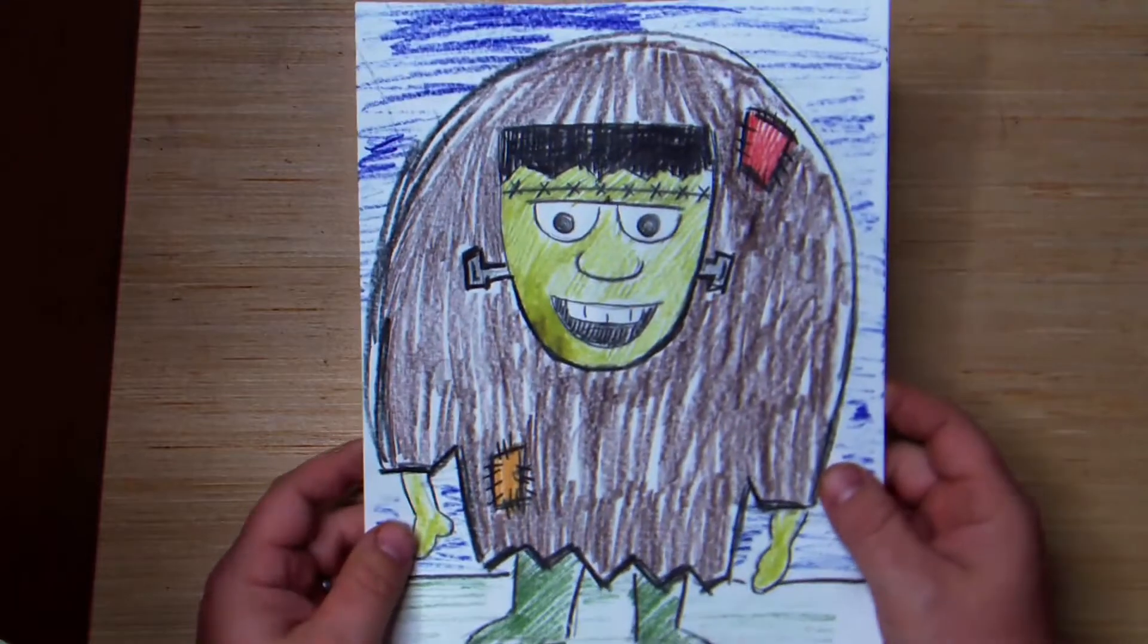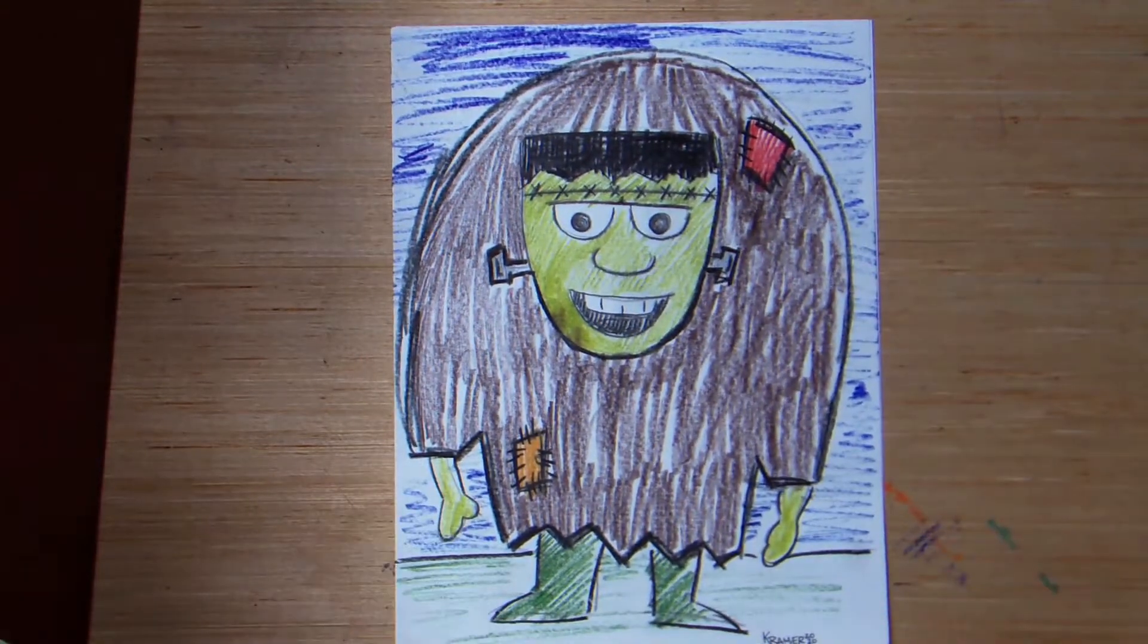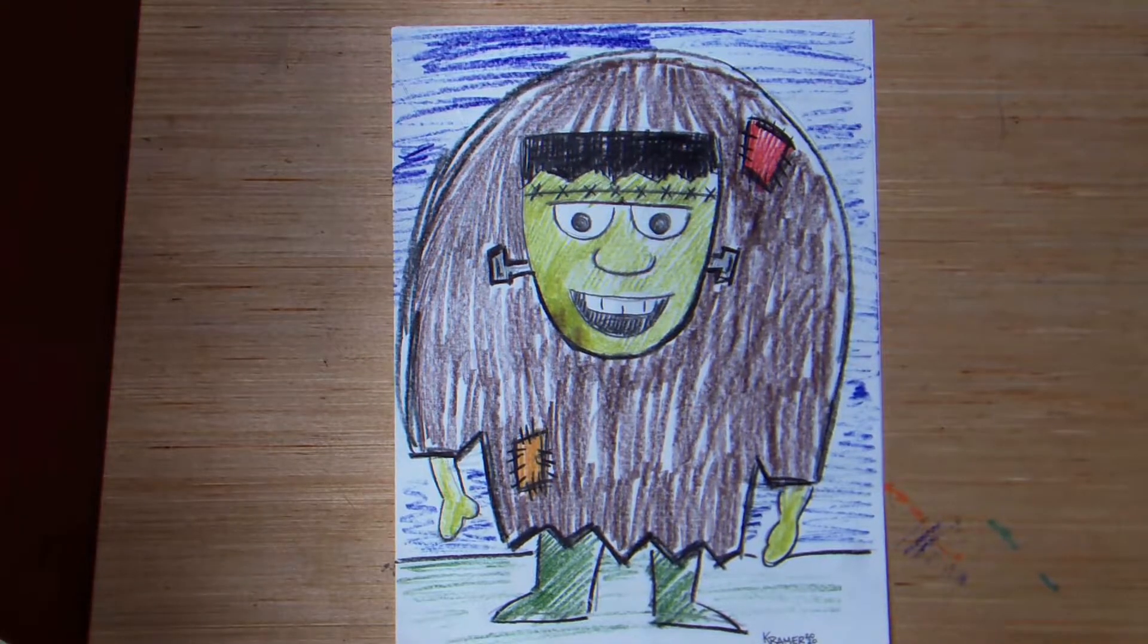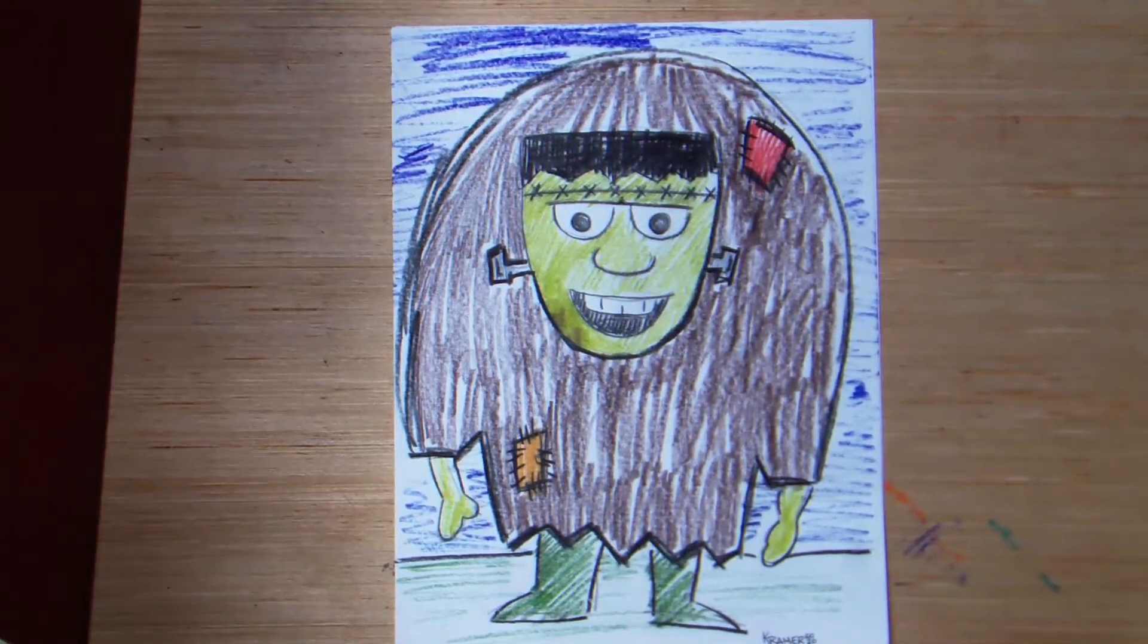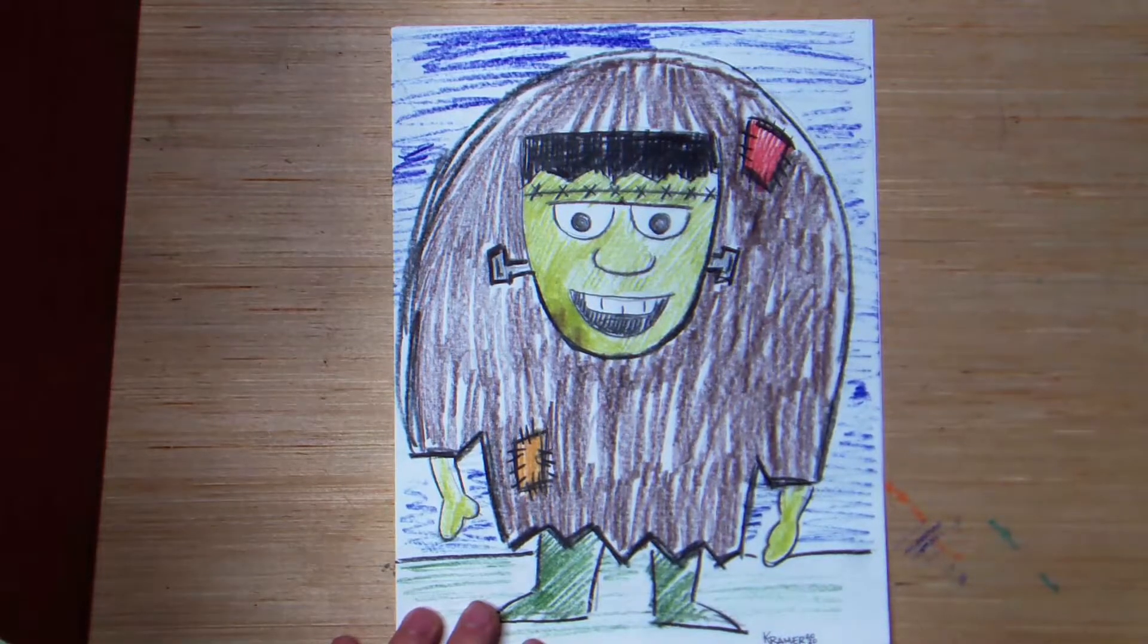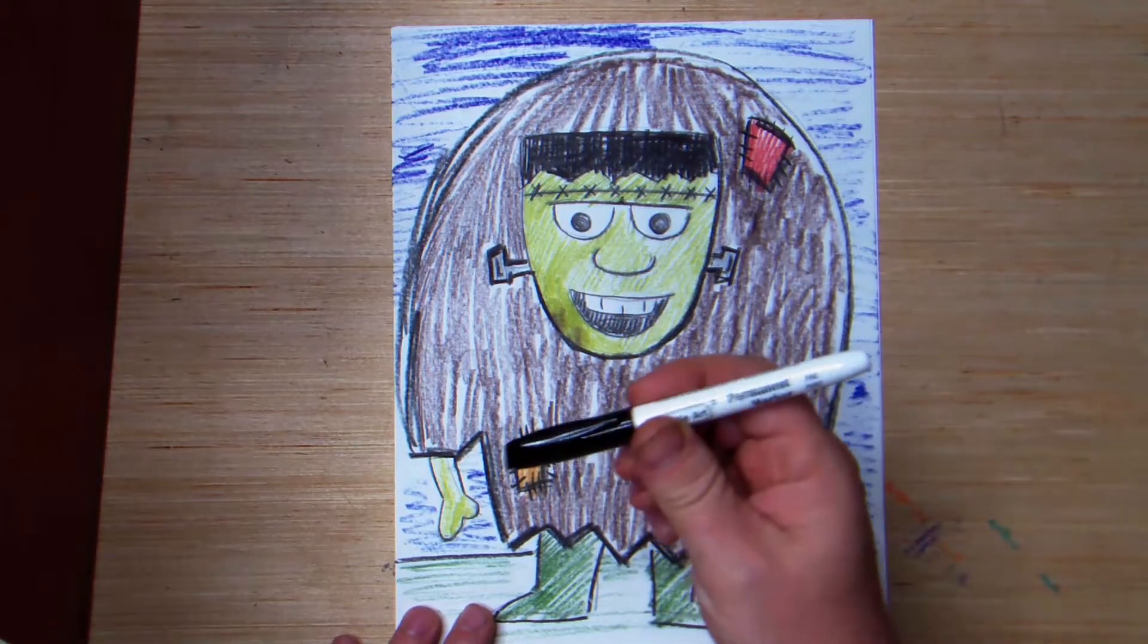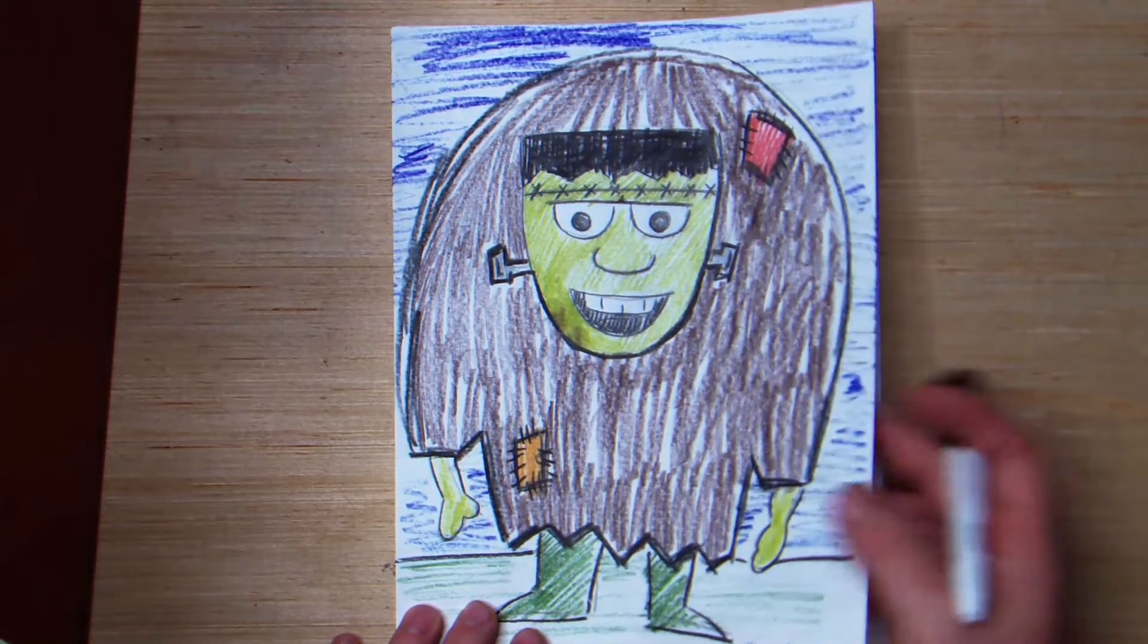Today, all you're really going to need is a pencil, maybe an eraser, and then later on, you're going to need some colors. You might want to have a black permanent marker at some point, or a black marker to outline your work. Today, I'm going to draw with a marker because it shows up better on the camera. So, let's go ahead and get started here.